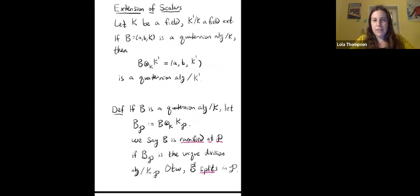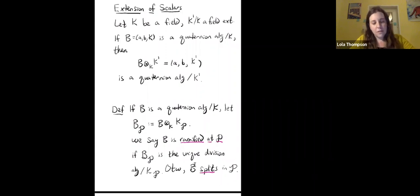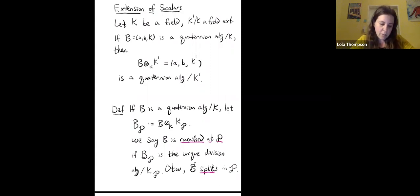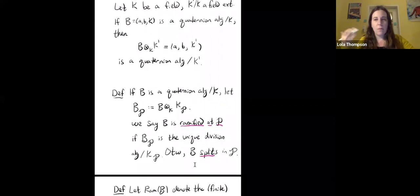Just like with other algebraic objects, we can do an extension of scalars of quaternion algebras. If we have a field K, a field extension K' over K, and a quaternion algebra B defined as (a, b / K), then if you tensor B with K' over K, you get the quaternion algebra (a, b / K'). That's how we extend scalars — by taking the tensor product. At various points I'll mention working in some field extension, and that's really what we're doing.